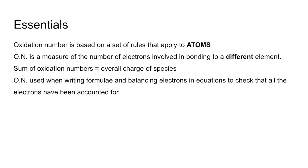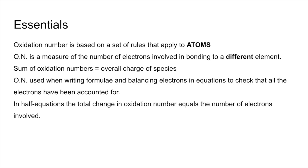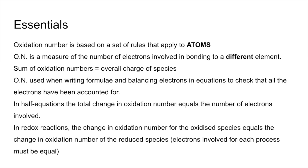Oxidation number is used when writing formulae and balancing electrons in equations to check that all the electrons have been accounted for. In half equations, the total change in oxidation number is equal to the number of electrons involved. And in a redox reaction, when you combine the two half equations together, the change in oxidation number for the oxidized species must be equal to the change for the reduced species — that's why the electrons cancel when you combine half equations.